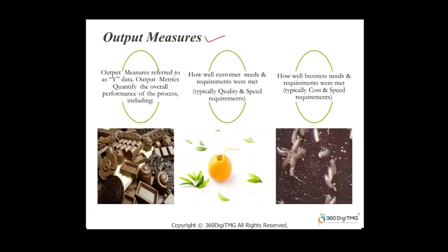Output measures are usually referred to as Y data. We've already discussed the equation Y = f(X), which says output is equal to a function of inputs. Output metrics quantify the overall process — including how well customer needs and requirements were met, typically relating to quality and speed, and also how well business needs were met, typically speaking about cost and speed requirements.